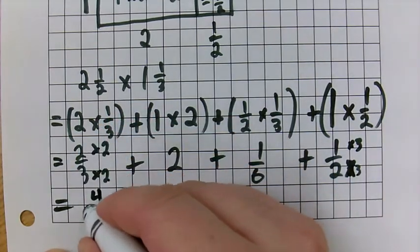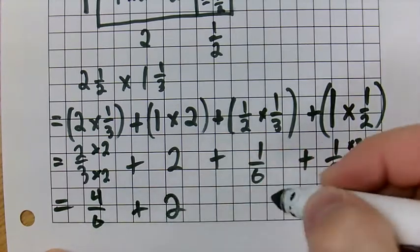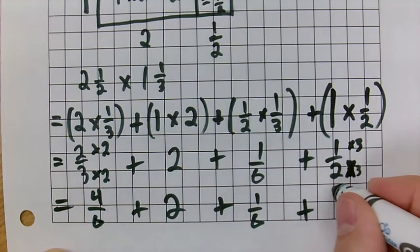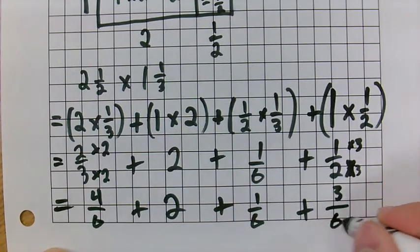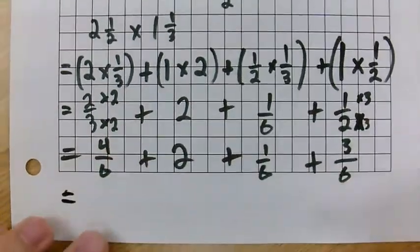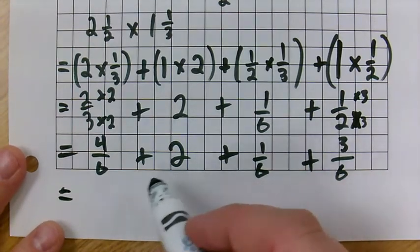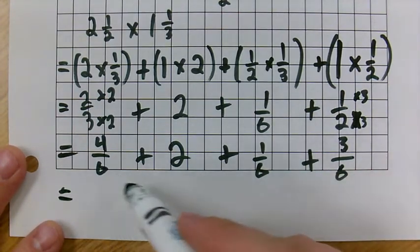So 2 times 2 is 4 sixths plus 2 plus 1 sixths plus 1 times 3 is 3. 2 times 3 is 6. If we add these up, right here, how many sixths do we have?